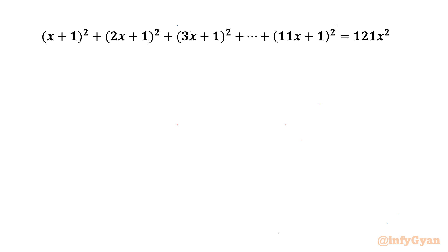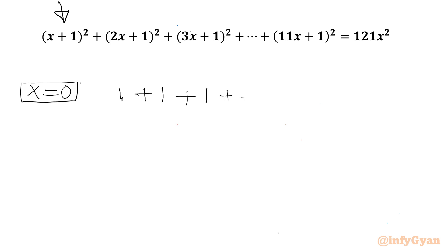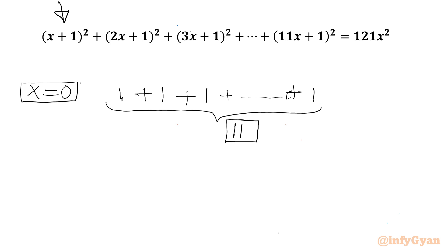We have to find the values of x. Let's get started by applying x = 0 to this equation. Substituting, each bracket gives 1, so the left-hand side totals 11 ones, making LHS = 11. The RHS gives 121 × 0² = 0. Since 11 ≠ 0, we conclude x cannot be 0.